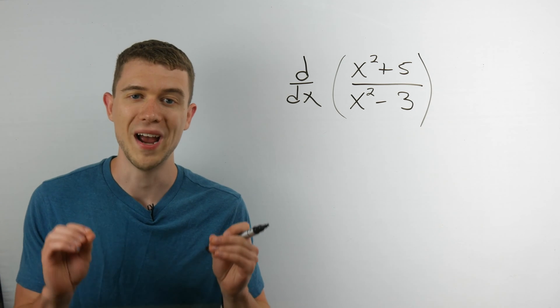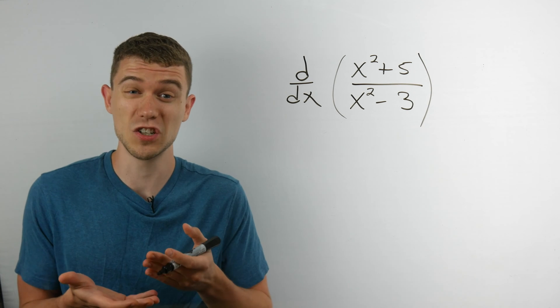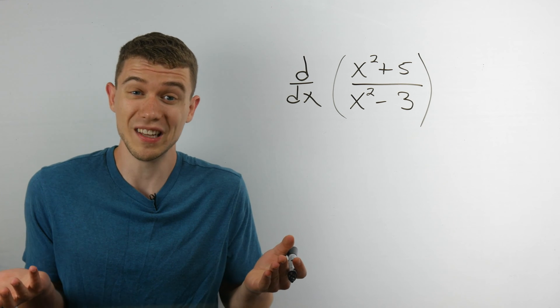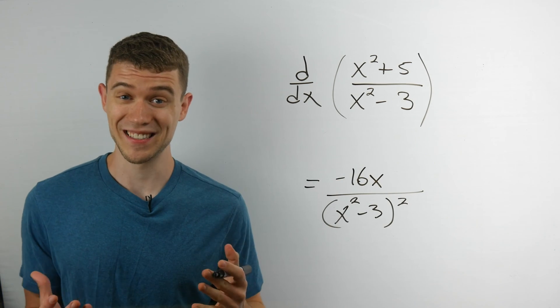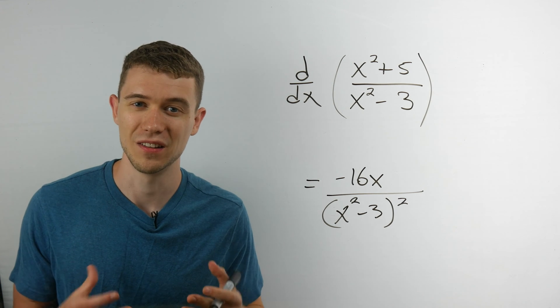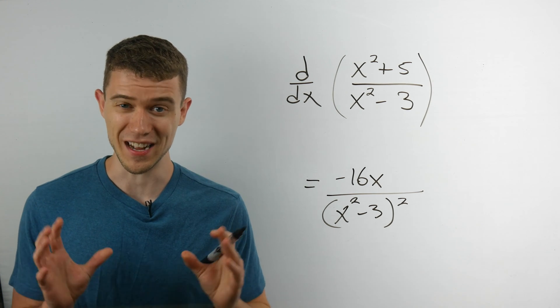So let me just show you how fast you can do this derivative. I'm just going to do it in one line in fact. And there you go, that's the derivative. You can check using the quotient rule, but let me show you exactly how I did that so quickly.